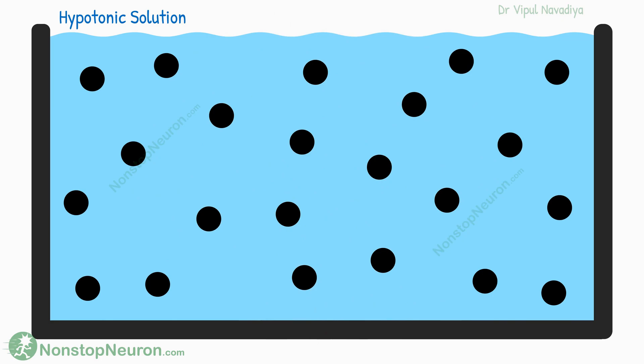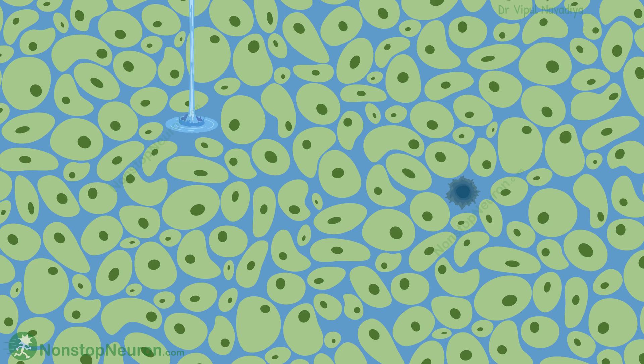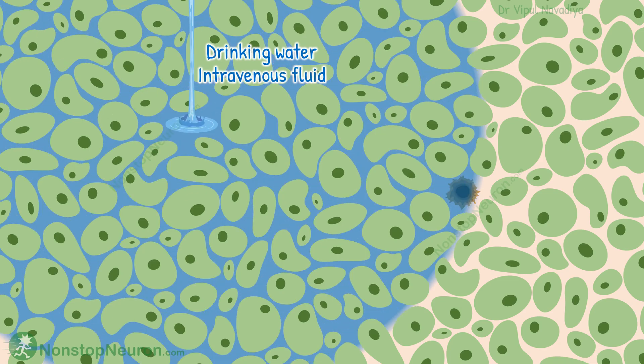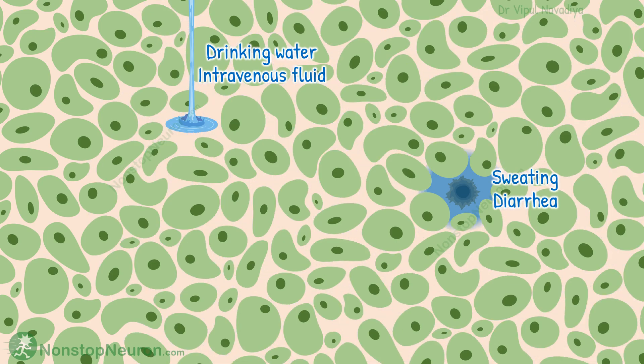So those are the effects of putting a cell in fluids with different tonicity, but this was only to make the basics clear. In real life, the cells don't move around like that. What's much more common is an addition or removal of fluid from the extracellular compartment — in conditions like ingestion of water or infusion of intravenous fluid, fluid is added to the extracellular fluid. And in conditions like sweating and diarrhea, the fluid is removed from the extracellular fluid.